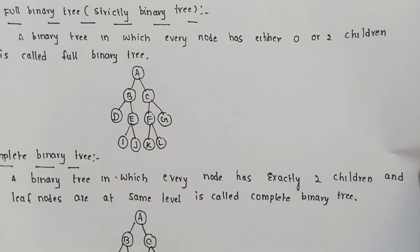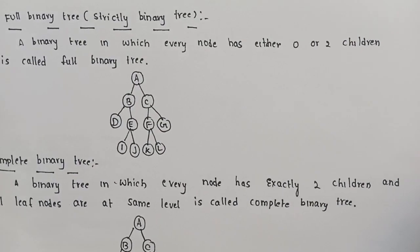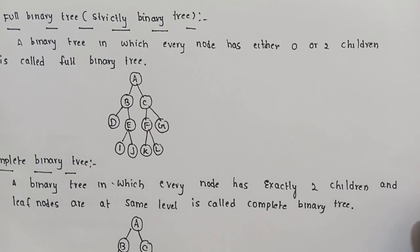The first type is Full Binary tree, also called Strictly Binary tree. In a strictly binary tree, every node has exactly zero or two children — no node has only one child.